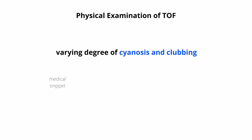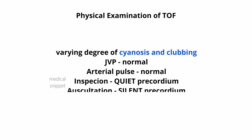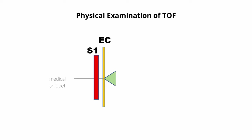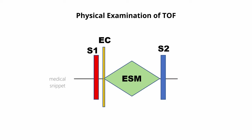Physical examination reveals varying degrees of cyanosis and clubbing. The JVP is normal and the arterial pulse is normal. The precordium is quiet on inspection and silent on auscultation. The precordium is quiet because the right ventricle ejects blood into the aorta via the large VSD rather than ejecting into the obstructed RVOT. The first heart sound is normal; the second heart sound is usually single because of the soft pulmonary component.